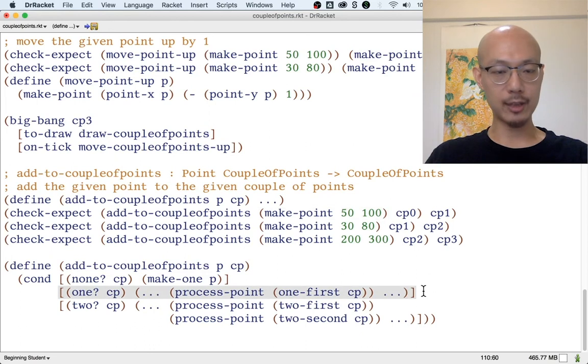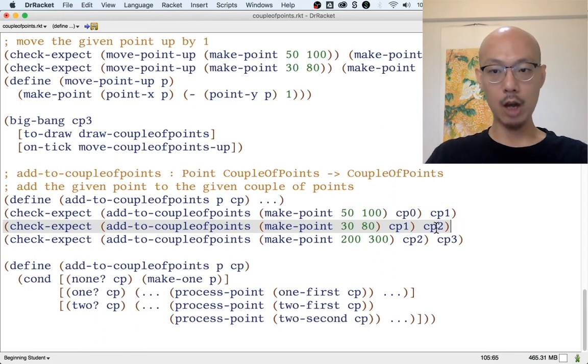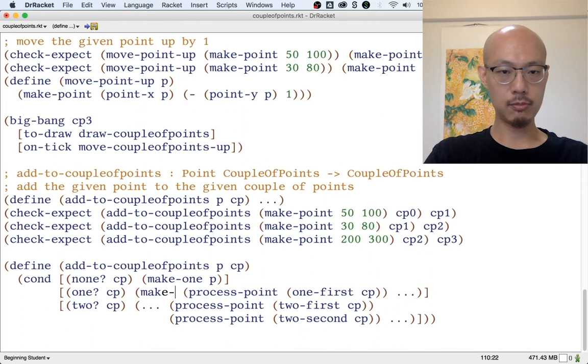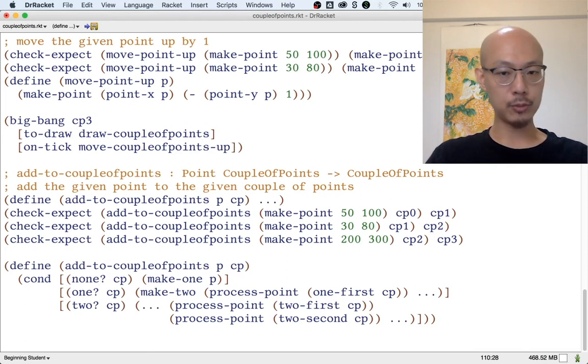What about the second case? What if the input already has one point? Well, according to our second example, the output should be made using make two. That's in the definition of CP2. And we need to give two points to make two. The first point is the new point P, such as 3080. The second point is actually just the first point, the only point in the existing couple points CP.